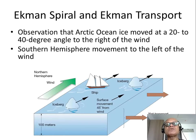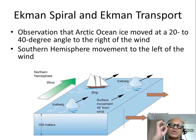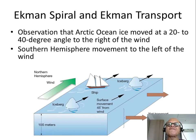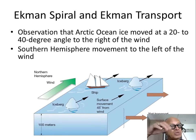Ekman came up with this relation from winds and friction to what should happen in the ocean, and left behind a fabulous legacy called the Ekman spiral. It is very weak in the ocean, so it doesn't do very much, but it's nonetheless a very important concept.